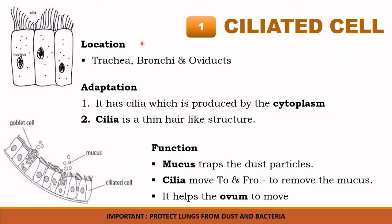For example, the ciliated cell, which is located in the trachea, bronchi, and oviduct. The adaptation of the ciliated cell is that these cells have adapted to have a structure called cilia from the cytoplasm. The cilia is a thin hair-like structure. Before learning about the ciliated cell, you should know about the goblet cell — this goblet cell releases mucus, which can trap dust particles.